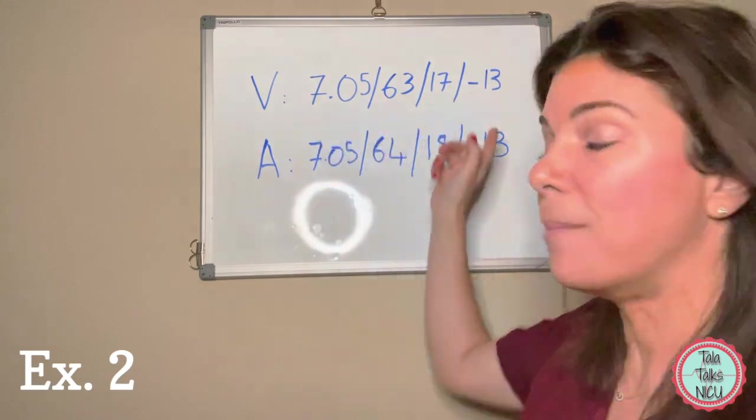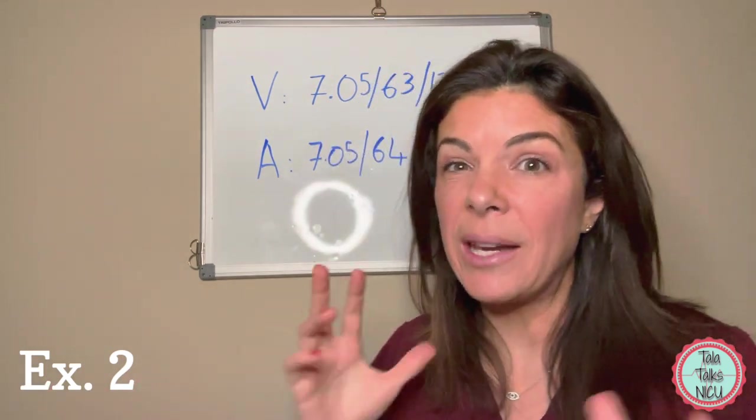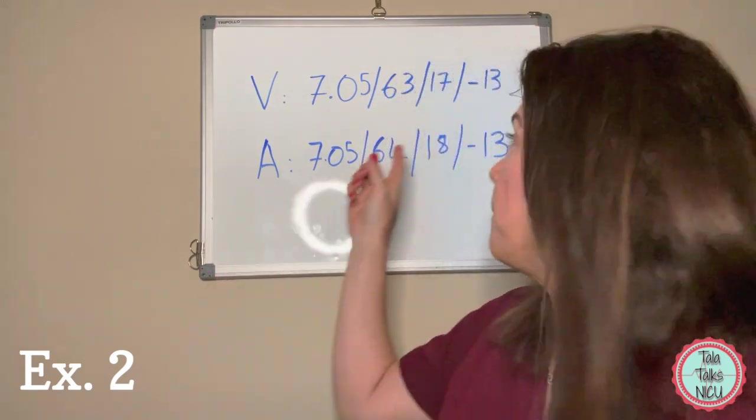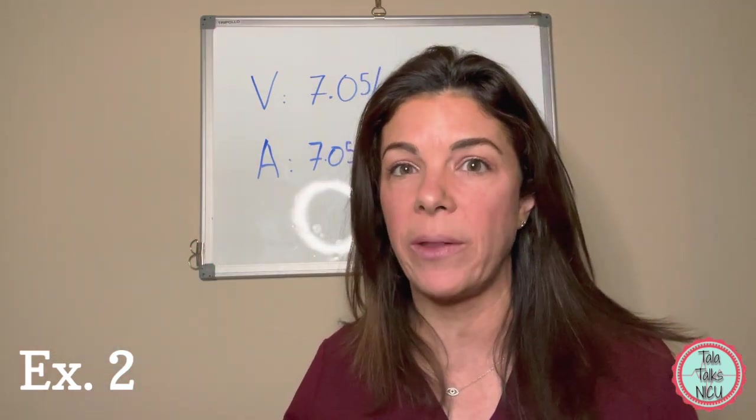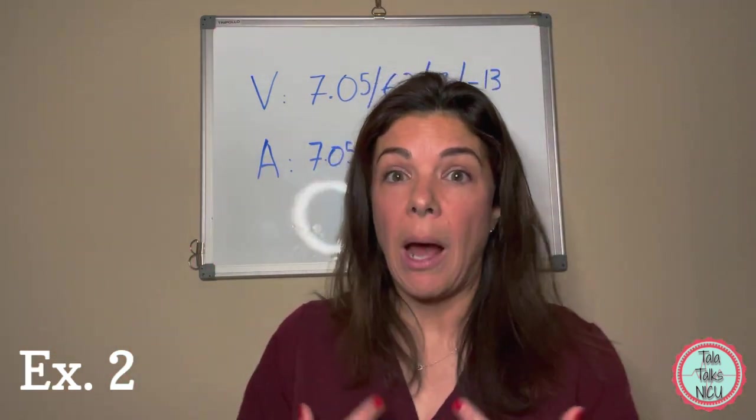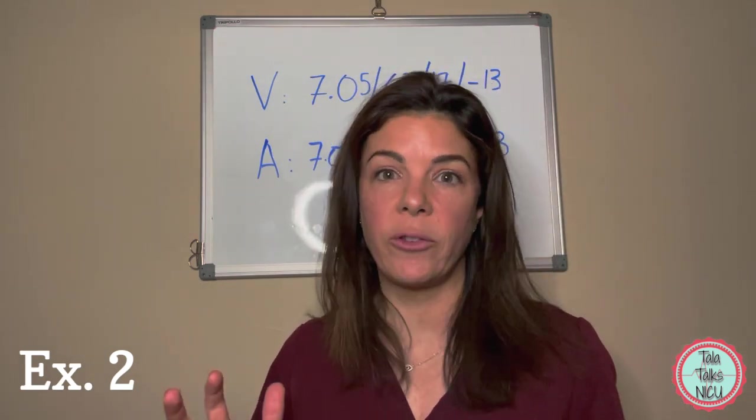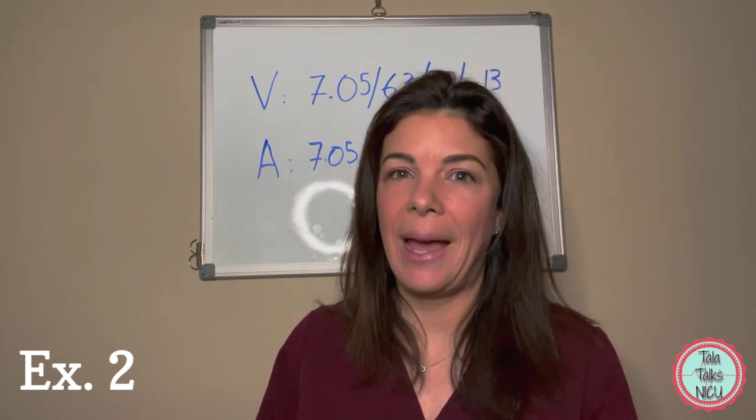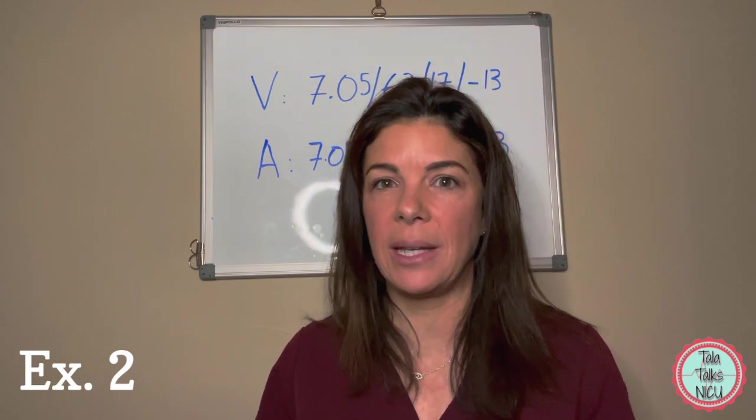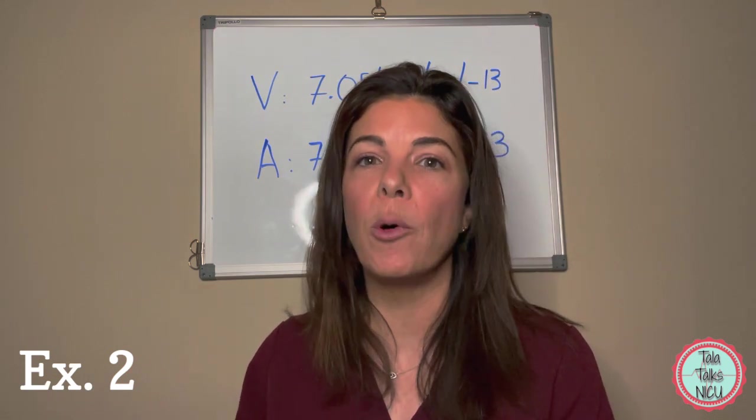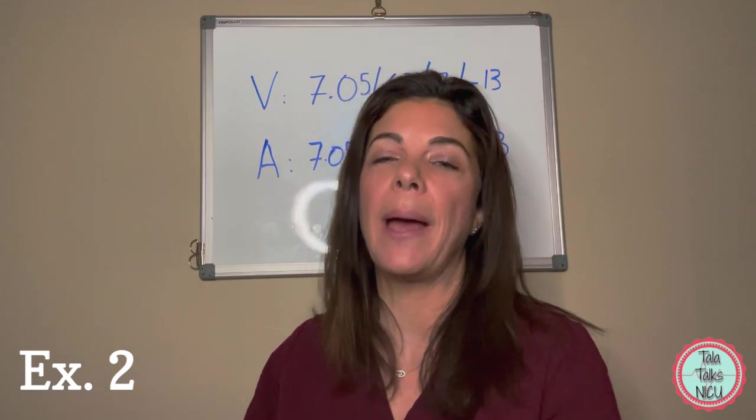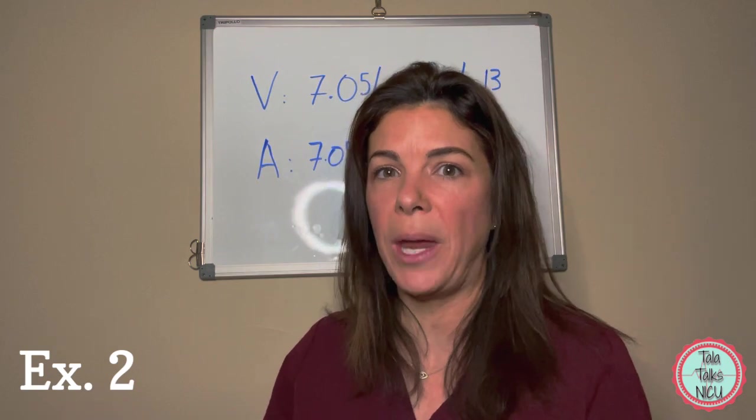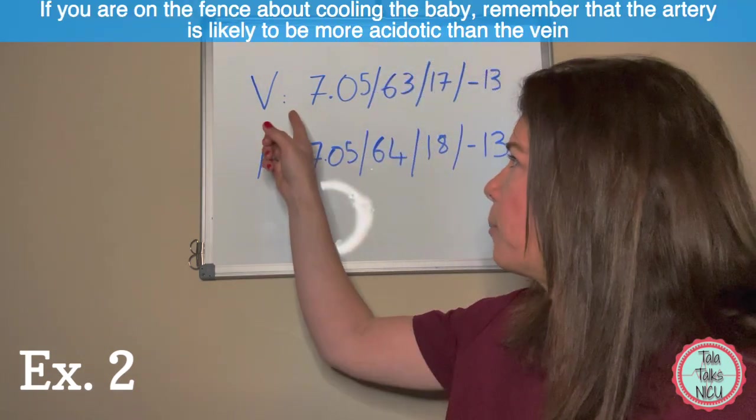Generally, if you have exactly the same blood gas twice, then you have to think they're probably both venous. In this case, what do we actually do with this gas? It's not great: pH of 7.05 with a minus 13. Remember the cooling criteria you use a lot of times are a pH of less than 7 and a base of minus 16, so they're getting pretty close to that.